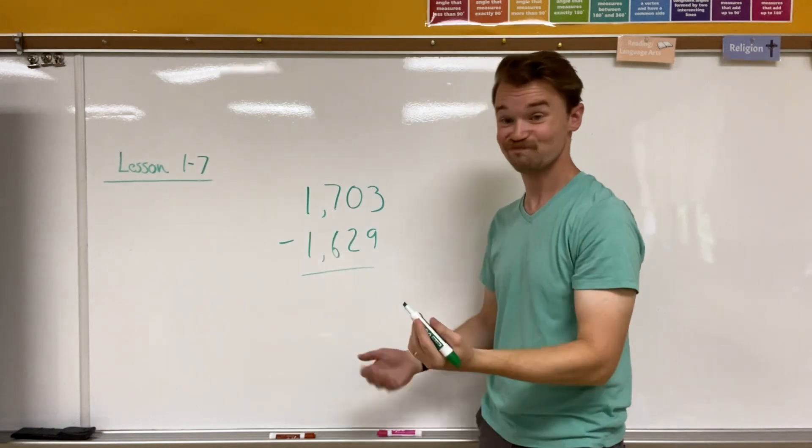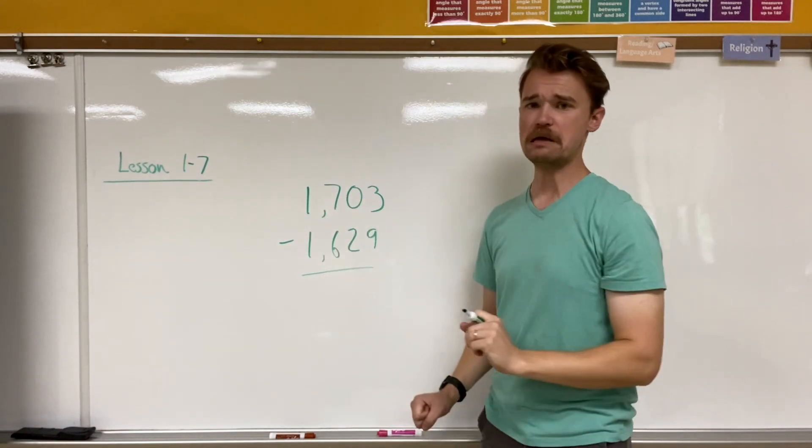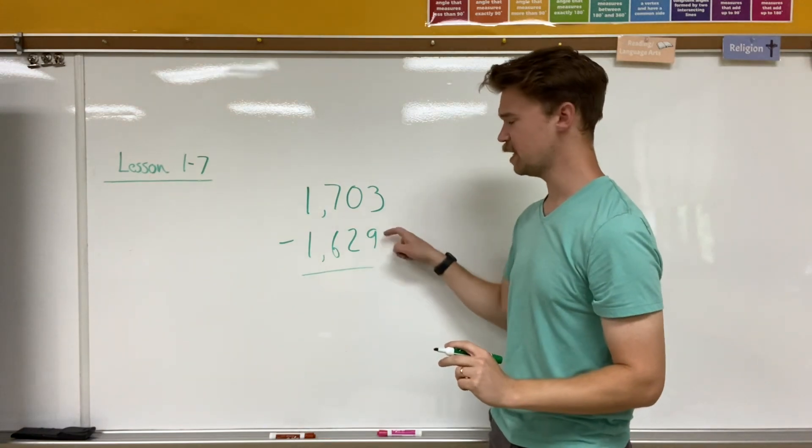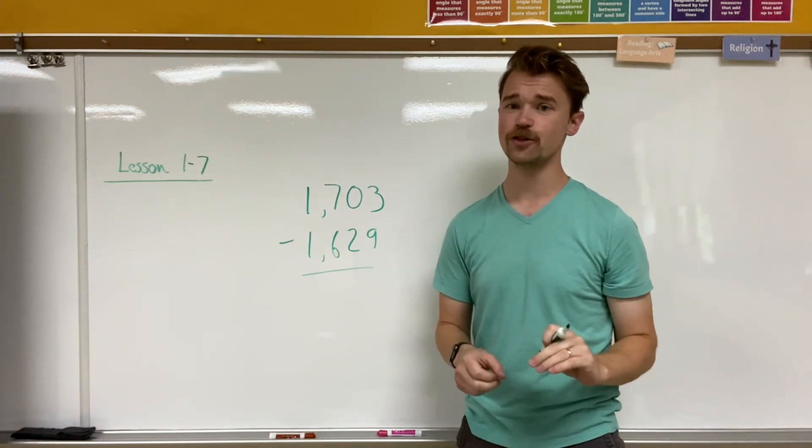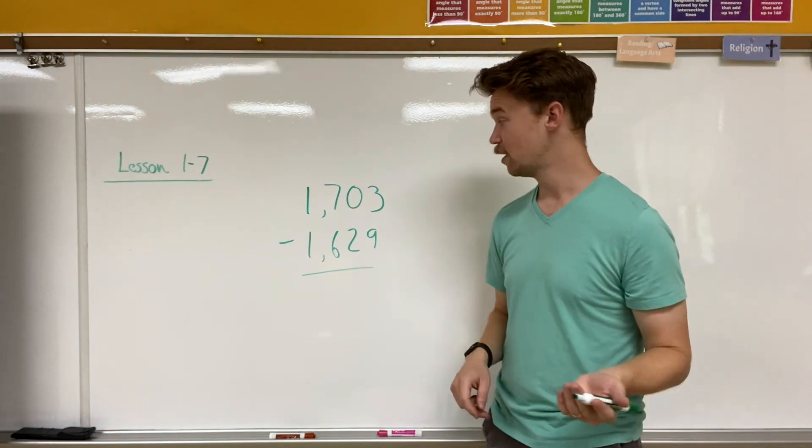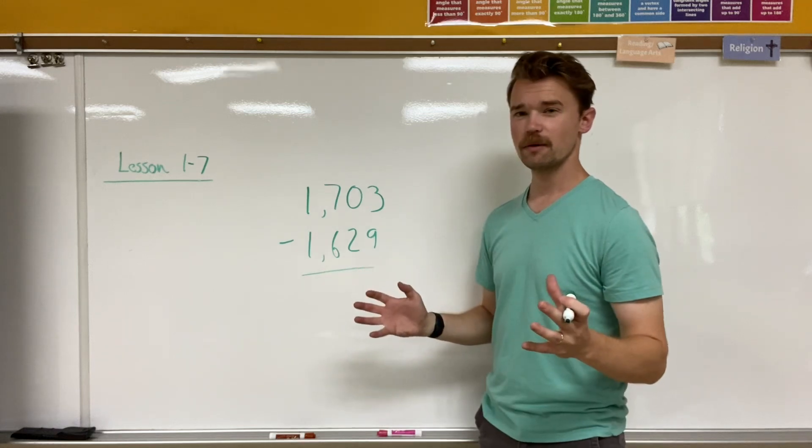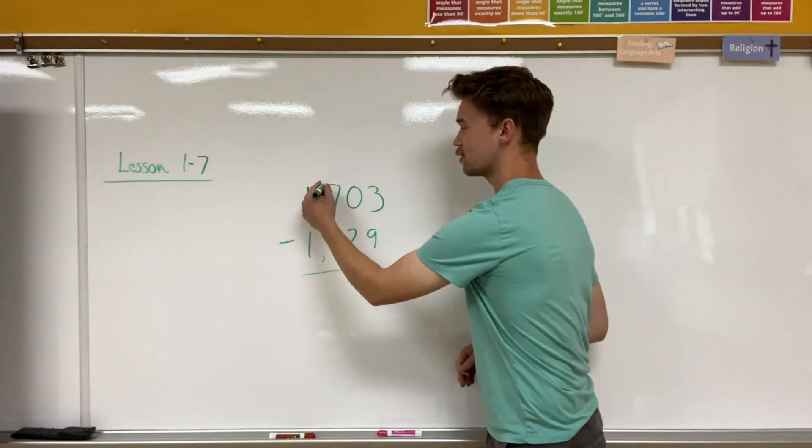So one minus one, I can do that. Seven minus six, I can do that. Zero minus two, oh, I can't do that. And three minus nine, oh, another one that I can't do without getting a negative number. And we're not quite ready for negative numbers yet, which means that I'm going to have to regroup or borrow as some mathematicians say.